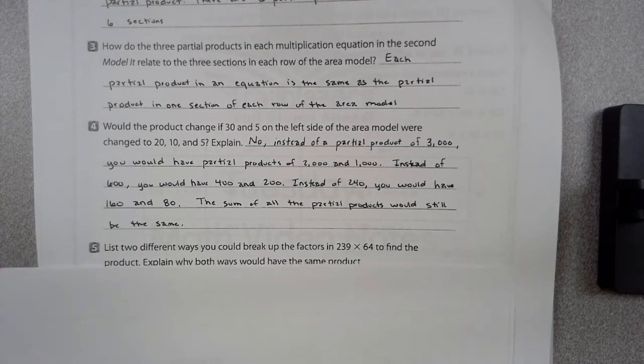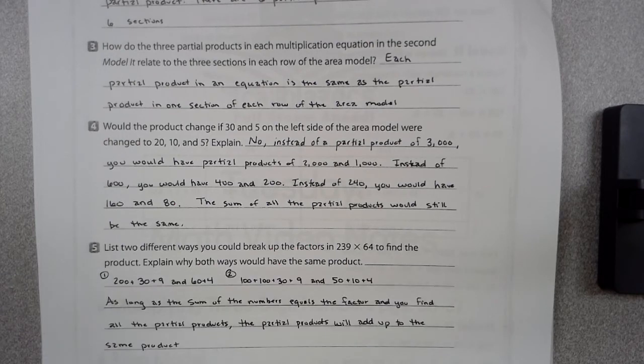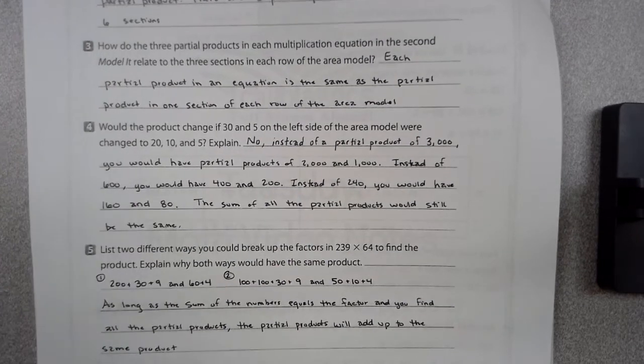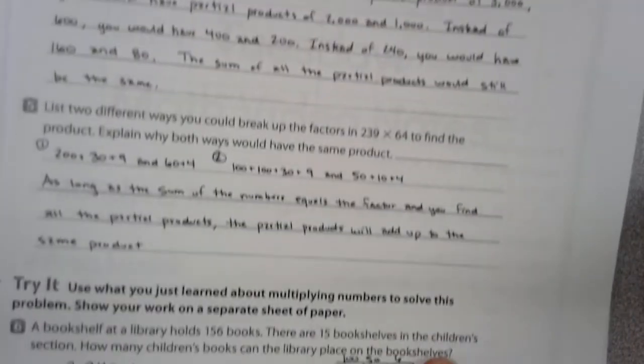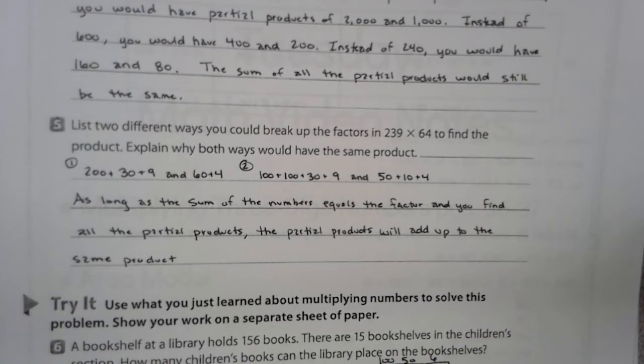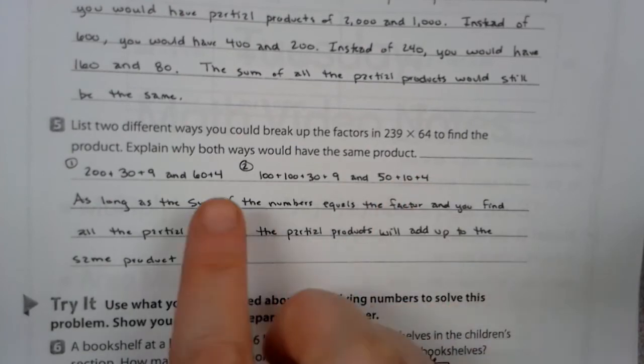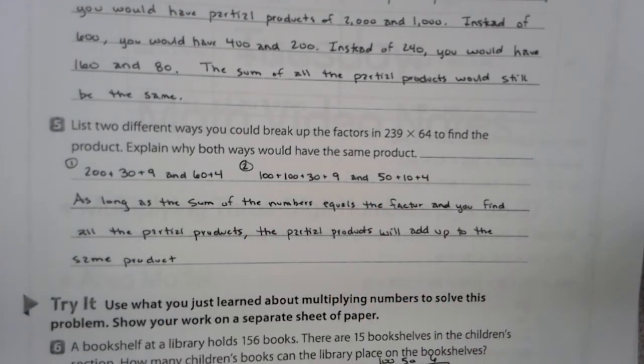Number five says, list two different ways you could break up the factors in 239 times 64 to find the product. The first one is I'm going to break it up by saying 200 plus 30 plus 9. That's the easiest way to do it. And then I'm going to go 60 plus 4. The second way I'm going to do it is I'm just going to break the 200 down. 100 plus 100 plus 30 plus 9. And then I'm going to go 50 plus 10 plus 4.